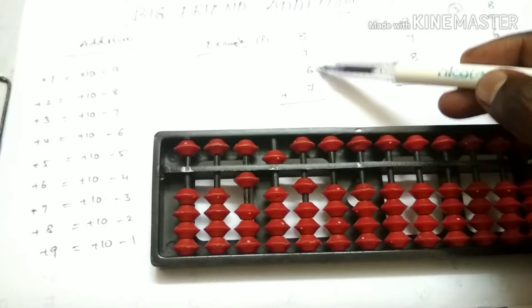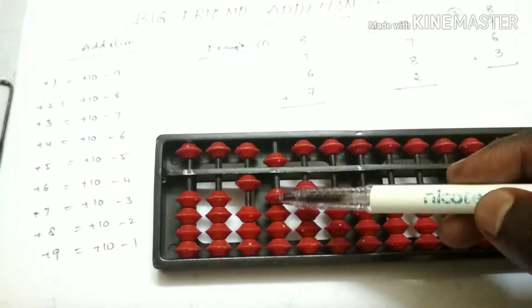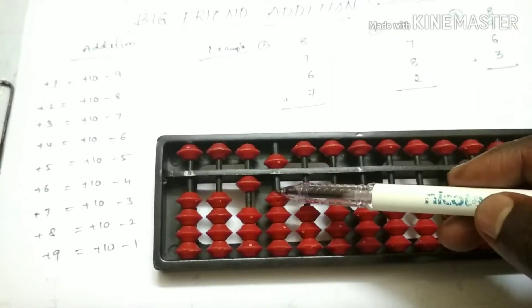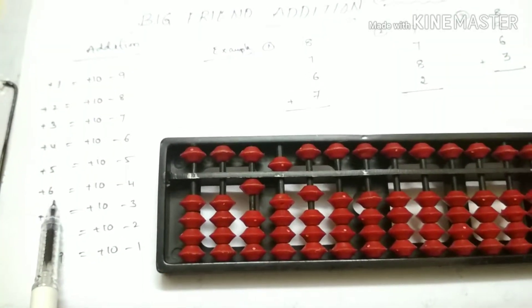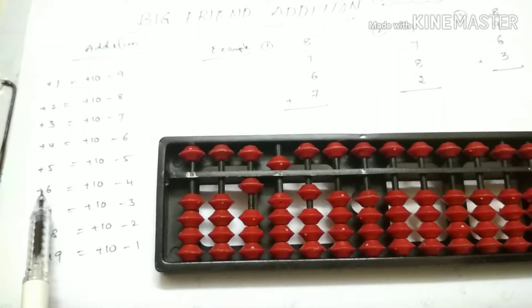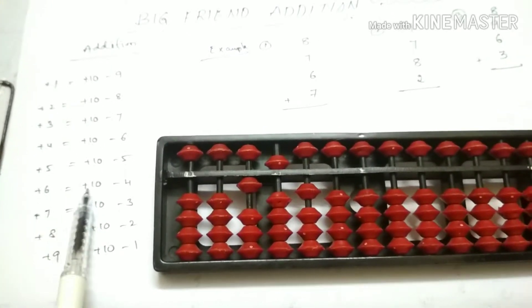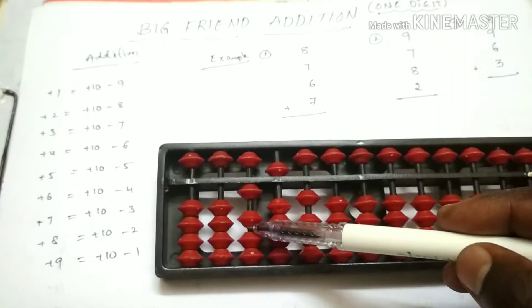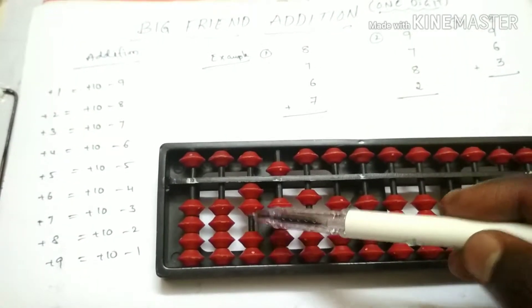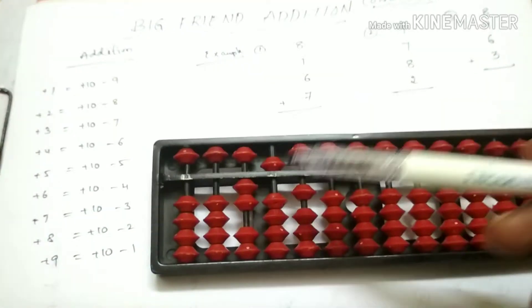Next, plus 6. Plus 6 is equal to 6 plus 1 to the digit. I will add the formula: plus 6 is equal to plus 10 minus 4. So again we are taking as 10, adding here, and then doing subtract minus 4.